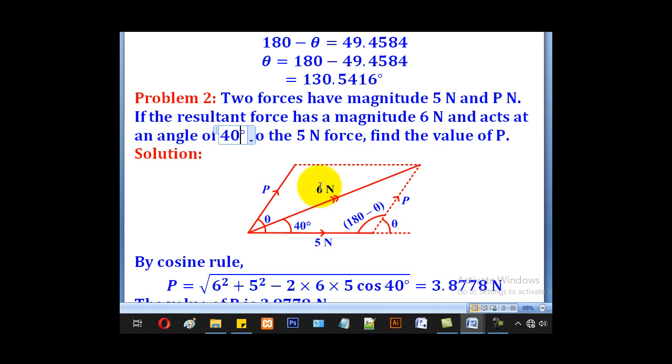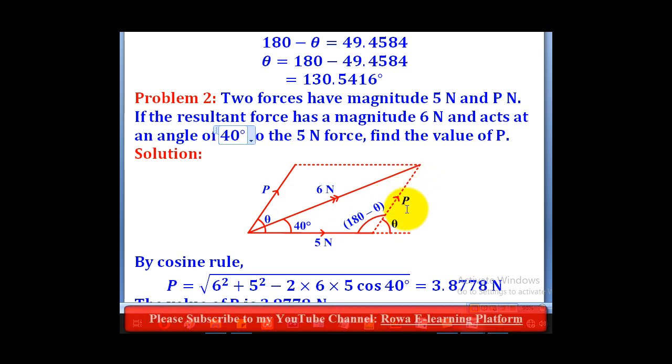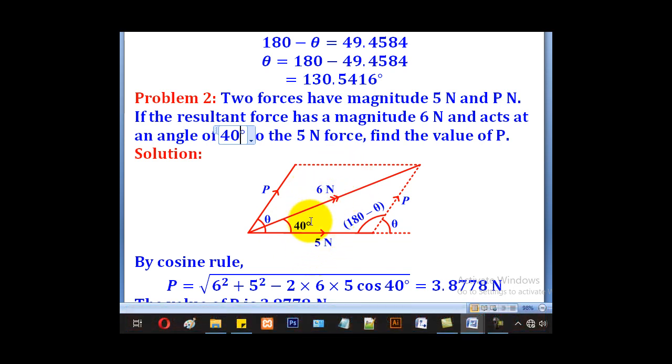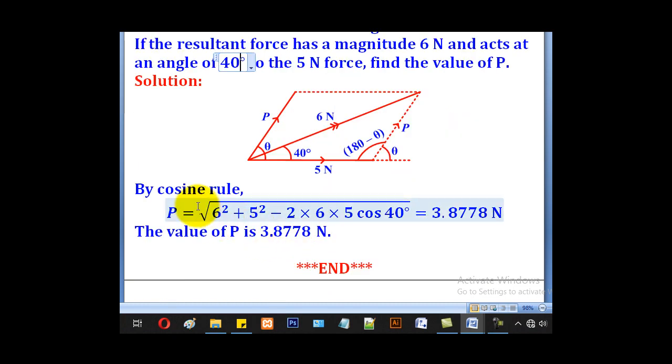So you can see that we have this side and we have this side and we have this angle. Meaning we can still use cosine rule to get P. So P squared will be equal to 6 squared plus 5 squared minus 2 times 6 times 5 cos 40 degrees. Just as it is here. And when we get the square root we shall be able to get our value of P which is 3.8778 newtons.